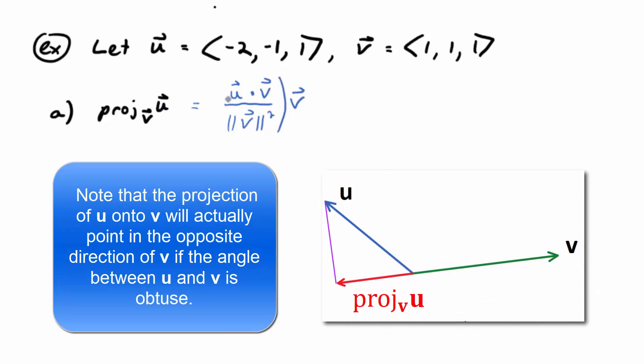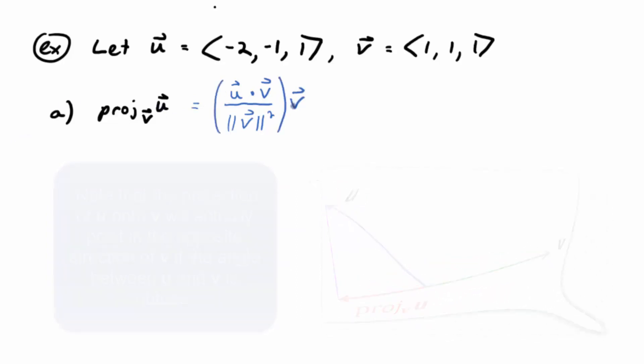So this is the scalar that you multiply times the vector of v. What does that formula tell you you need to do? Let the formula be your guide. Look at the numerator in that scalar. What does it tell you you need to find? Dot product. U dot v.